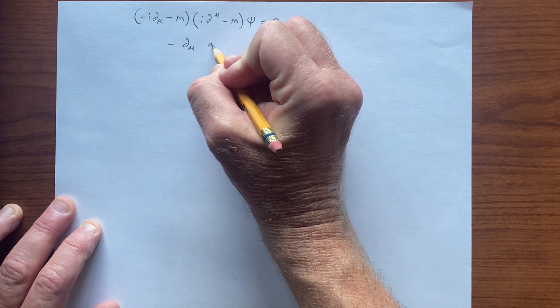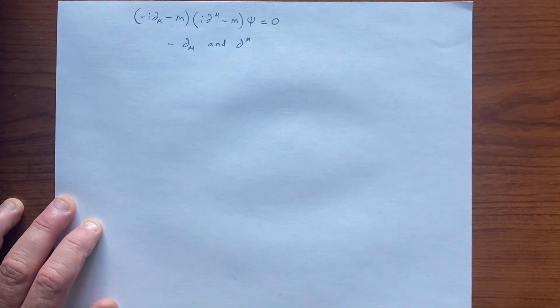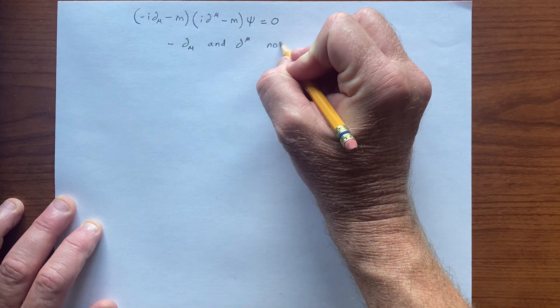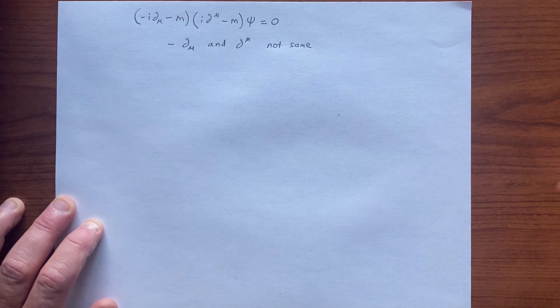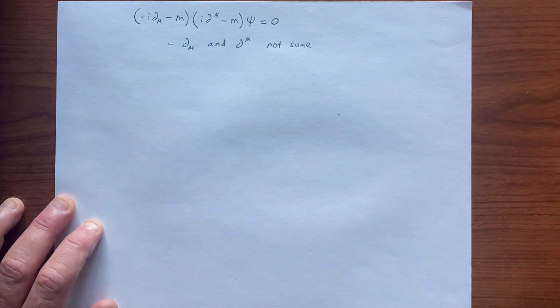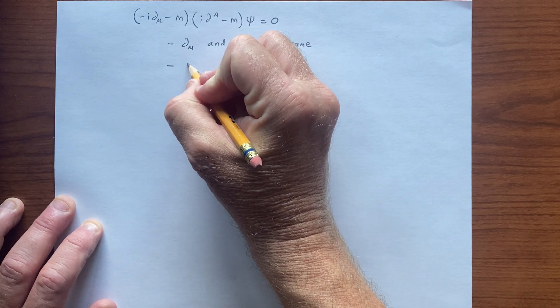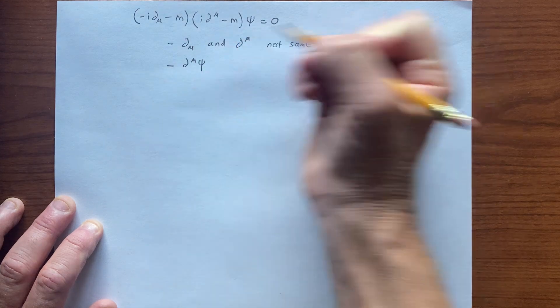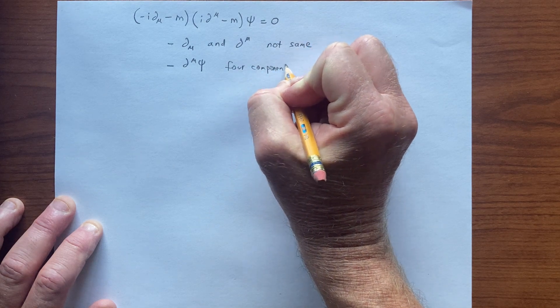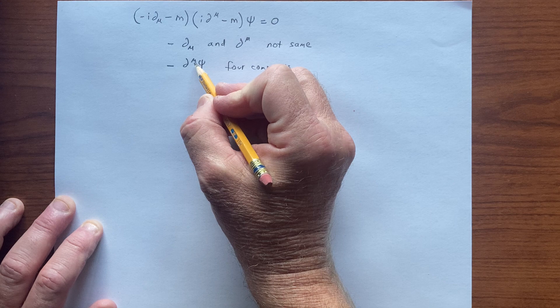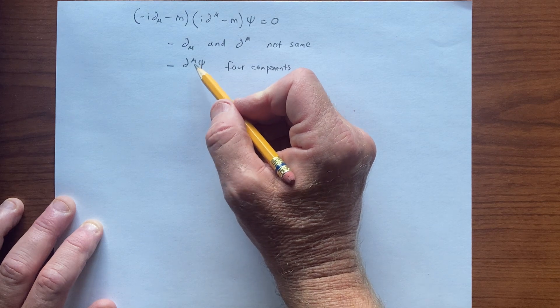We notice that d_mu and d^mu, one has upper components, the other has lower components, they're not quite the same. But perhaps more importantly, this object has four components—the index goes from zero to three.